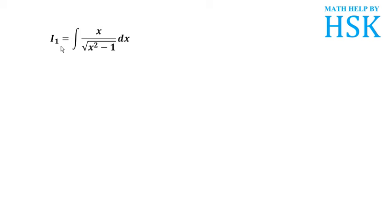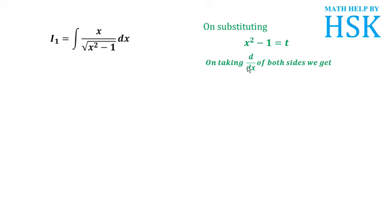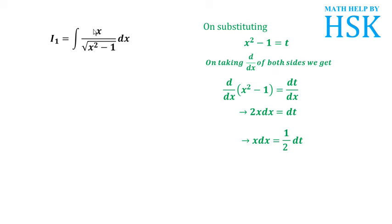Taking integral i1: I have x upon under root of (x squared minus 1). It should be obvious that if I differentiate x squared, I get x, which is in the numerator. So to integrate this, I substitute x squared minus 1 equal to t. Differentiating both sides with respect to x, I get 2x dx equal to dt, or x dx equal to 1 upon 2 dt. So instead of x dx, I write 1 upon 2 dt, and x squared minus 1 becomes t.